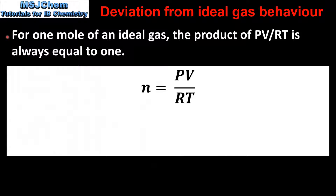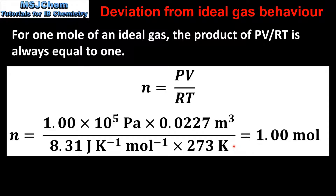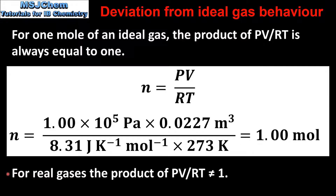For one mole of an ideal gas the product of PV over RT is always equal to 1. Here we have the ideal gas equation rearranged to solve for n, which is amount in moles. If we substitute in the values for the pressure and temperature at STP we get a value of 1 mole. As we'll see in the next slide, for real gases the product of PV over RT is not equal to 1.